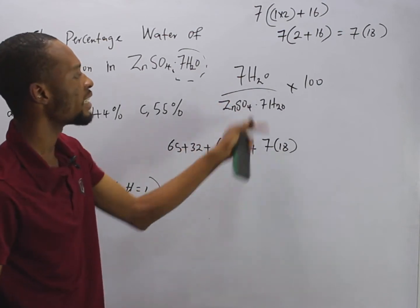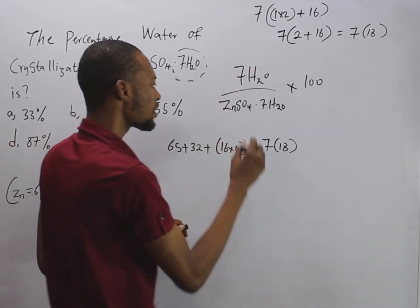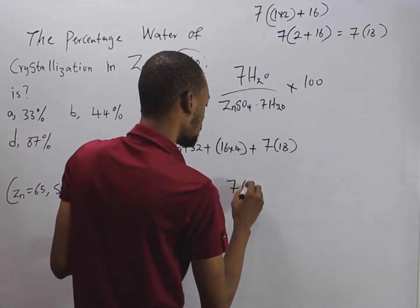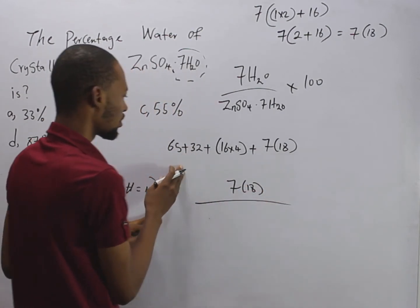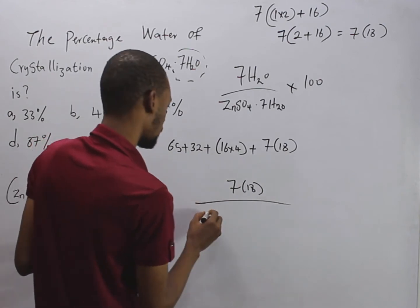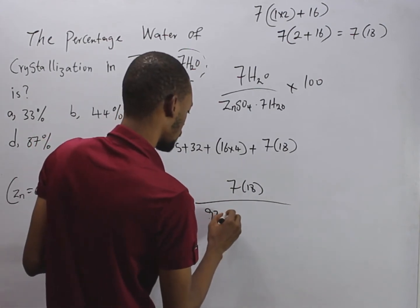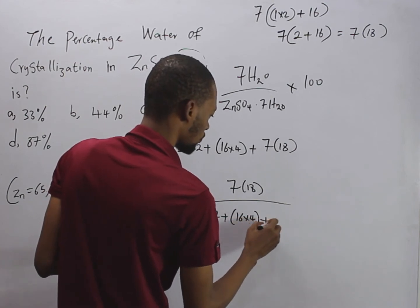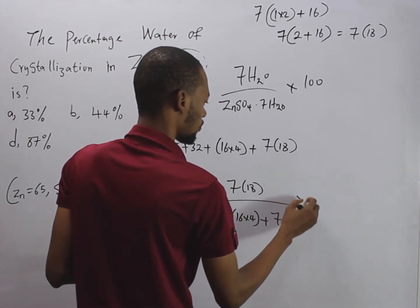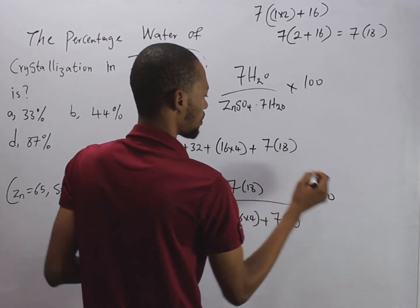So putting it in this formula, the mass of 7H₂O is 7 times 18 over the mass of the full compound, times 100.